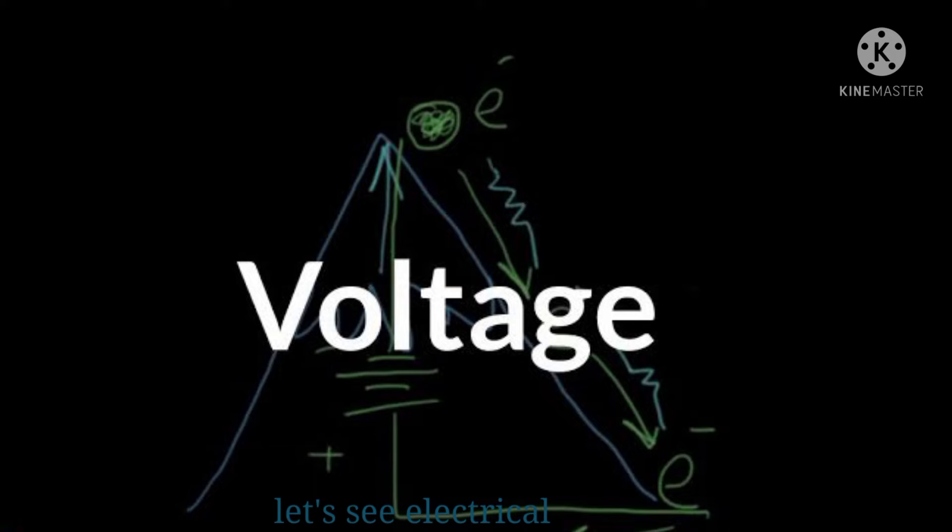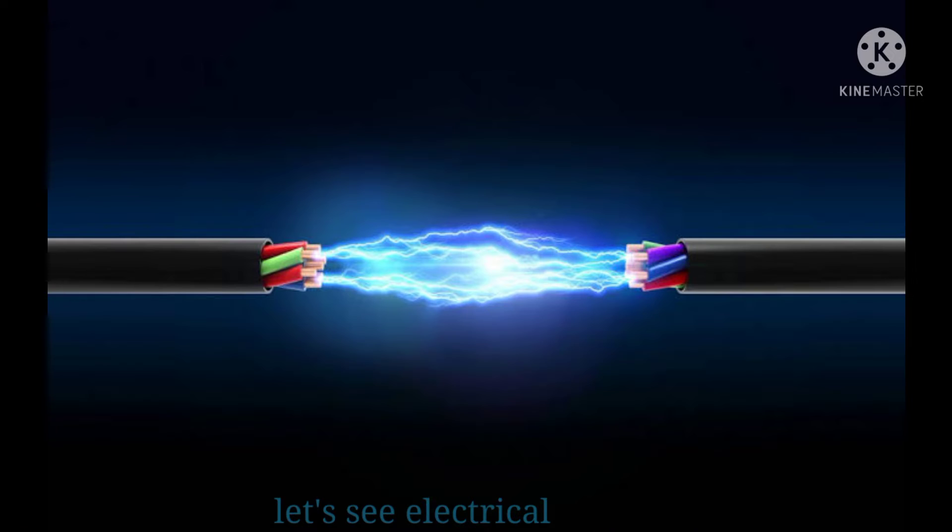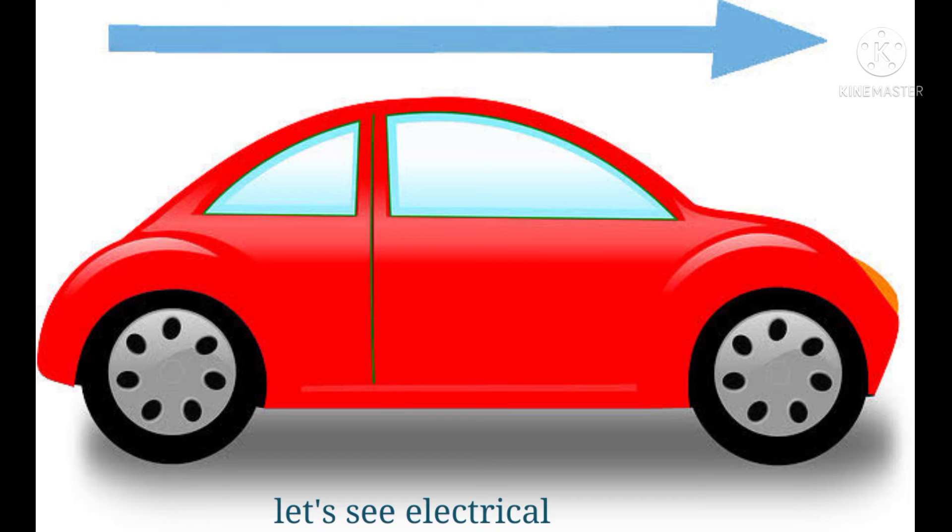Hi viewers, today we discuss voltage in electrical terms. The definition of voltage is the potential difference between two nodes or two points. Let's assume a car traveling on the road. The road means a conducting wire.